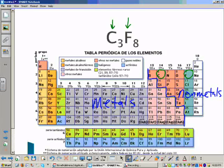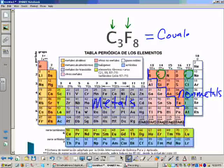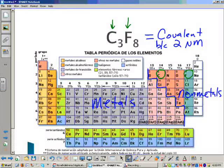So both of our elements, the C and the F, the carbon and the fluorine, are both on the right side of the staircase. They're both nonmetals. So the consensus is this is covalent because there's two nonmetals.